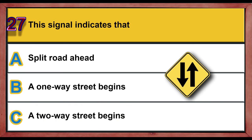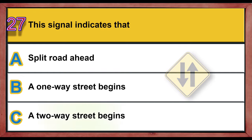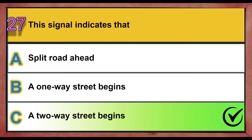Question 27. This signal indicates that: A. Split road ahead. B. A one-way street begins. C. A two-way street begins. Correct answer is C: A two-way street begins.